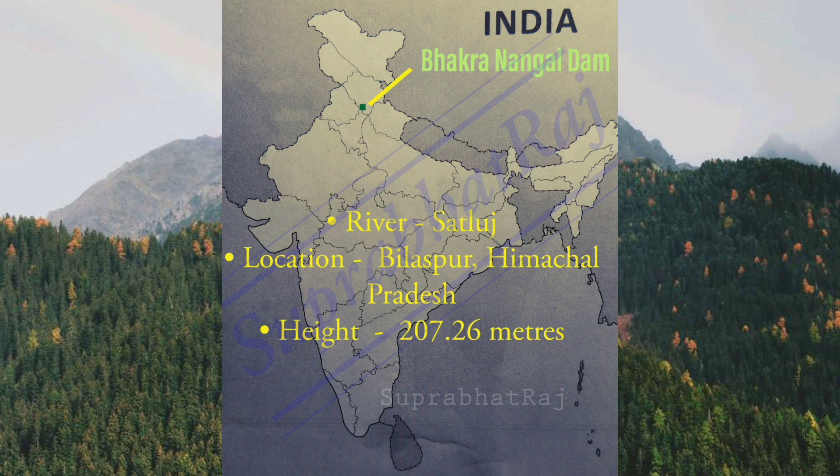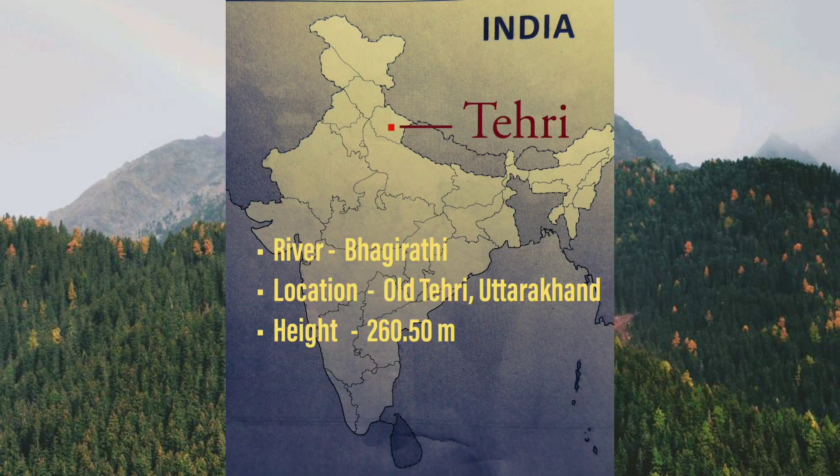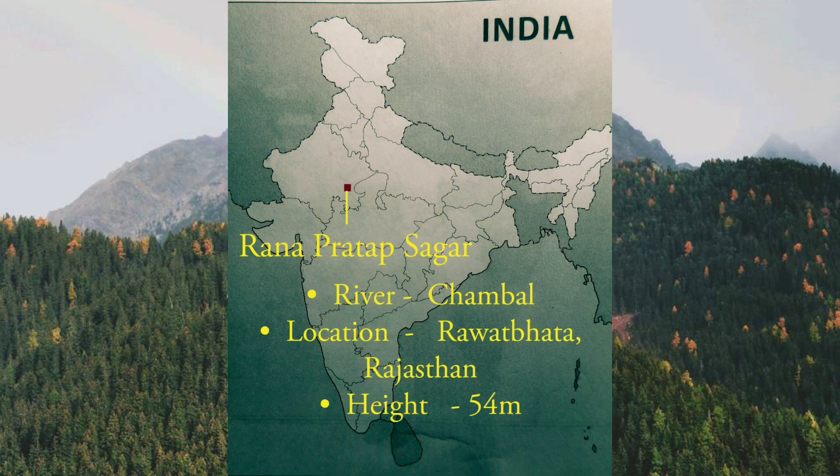Bhakra Nangal Dam is located on the Sutlej River in Bilaspur, Himachal Pradesh. Its height is 207.26 meters. Next is Tehri Dam. It is located on the Bhagirathi River in old Tehri, Uttarakhand. Its height is 260.5 meters. It is the tallest dam in India.